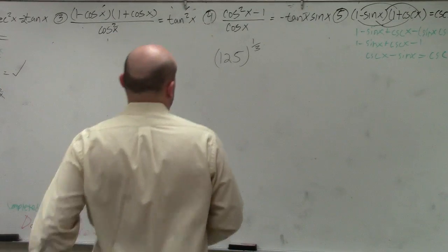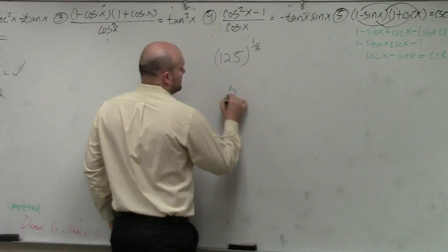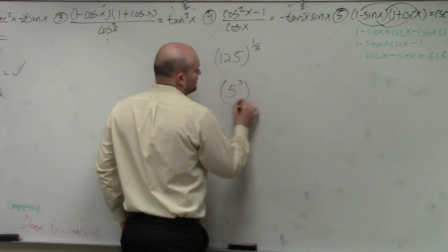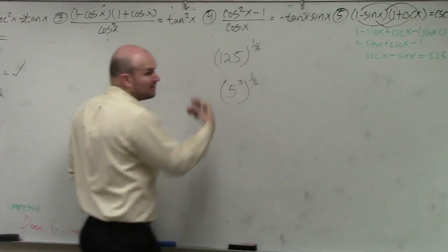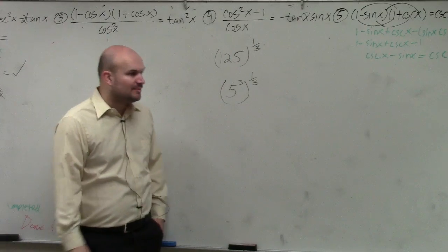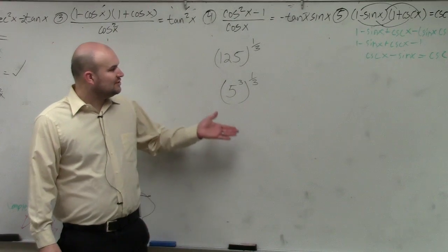What you could do is rewrite 125 as 5 cubed. Since we know that 125 is a cubed number, if I rewrite it as 5 cubed,